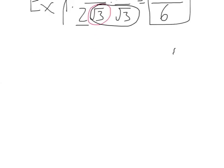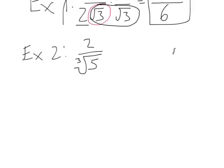Let's do another one. Example 2: let's say I have 2 over the cube root of 5. You look at this and think back to the previous example, and your first instinct — don't write this because it's not correct — but your first instinct is probably going to be to multiply the numerator and denominator by the cube root of 5.